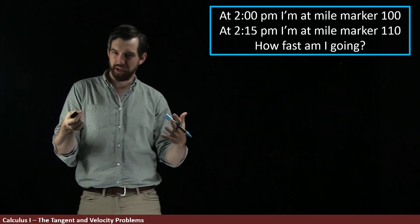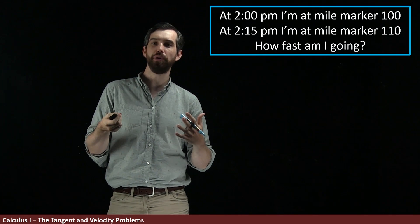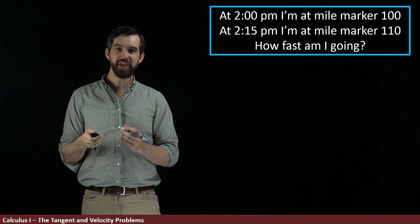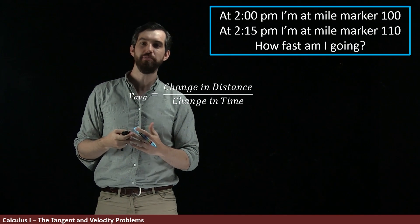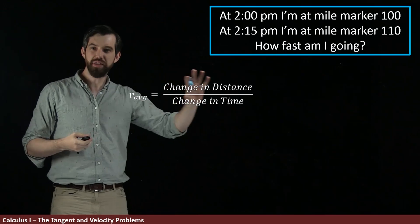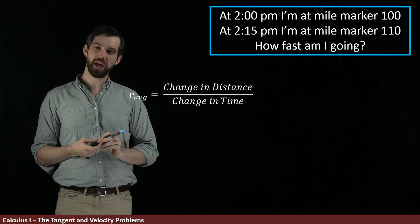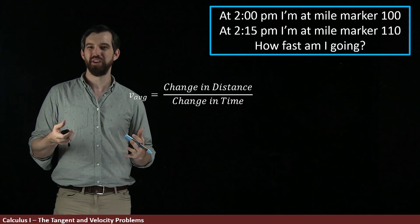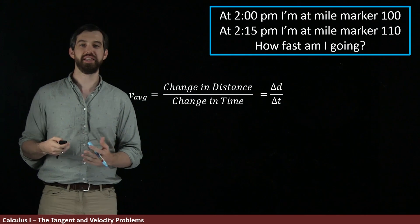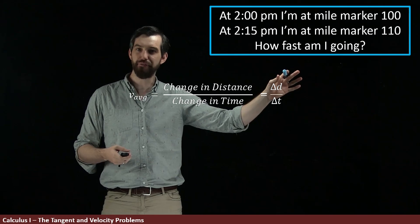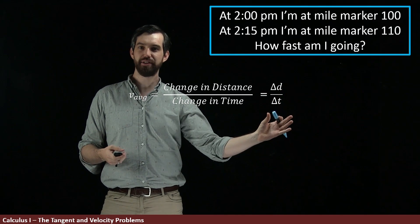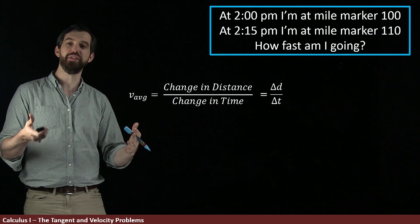One way that we could answer it is by something called the average velocity. So the average velocity is going to be the change in the distance divided out by the change in the time. Or if I want to use a little bit of mathematical notation I could say that this is delta d for the change in the distance divided by delta t the change in the time.